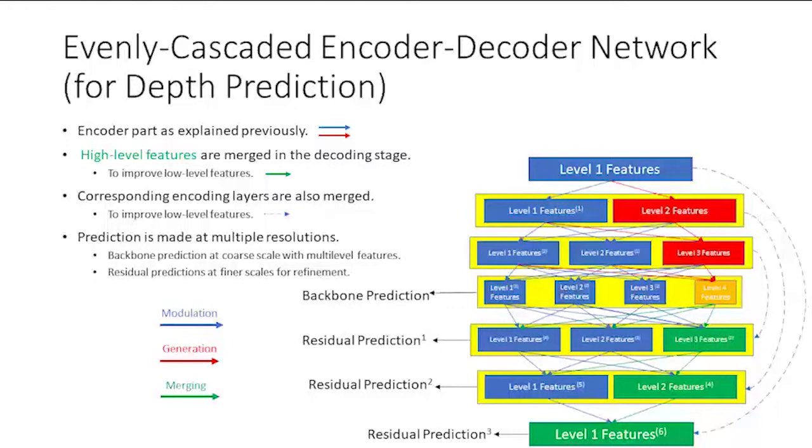First, we predict at the coarse level with multi-level features. Then, the estimations are up-sampled and refined in deeper decoding layers by estimating the residues from the coarse prediction.